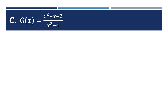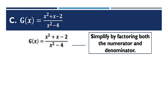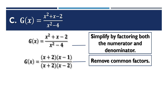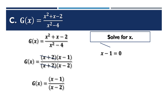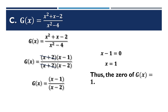Example 3: g(x) = (x² + x minus 2) over (x² minus 4). Factor both numerator and denominator: (x + 2)(x minus 1) over (x + 2)(x minus 2). Remove the common factor (x + 2) to get g(x) = (x minus 1) over (x minus 2). Equate the numerator to 0: x minus 1 = 0, so x = 1. Therefore the zero of g(x) is 1.